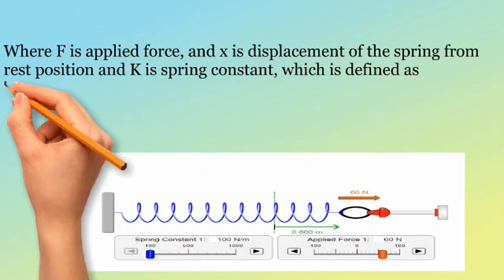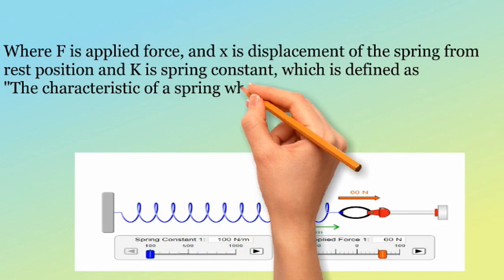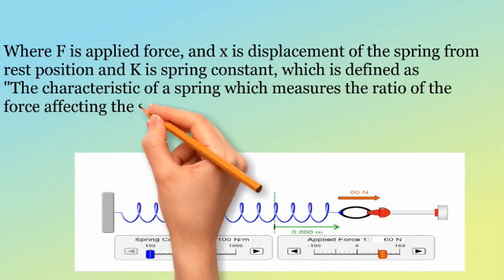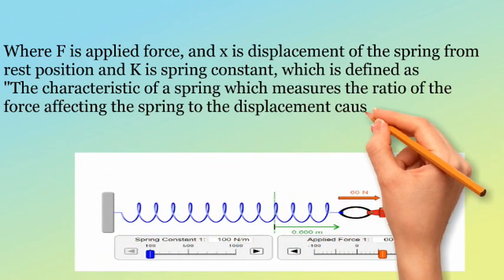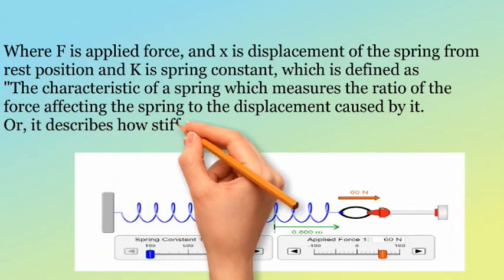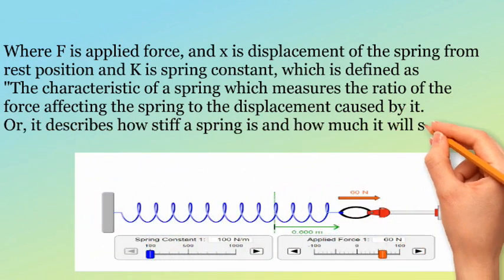Which is defined as the characteristic of a spring which measures the ratio of the force affecting the spring to the displacement caused by it. Or, it describes how stiff a spring is and how much it will stretch or compress.